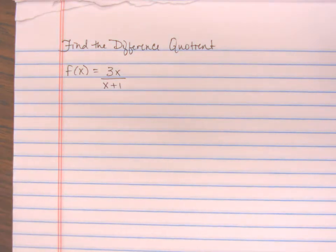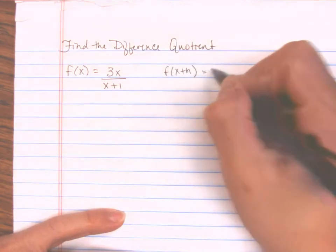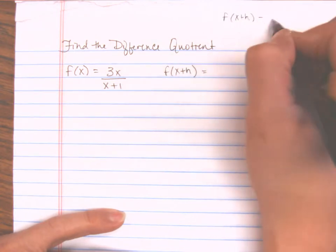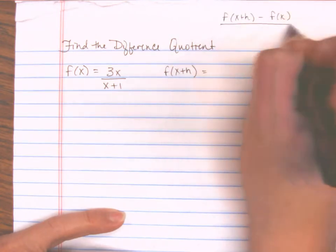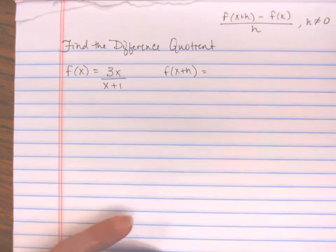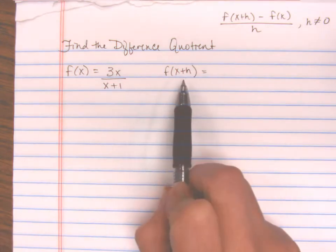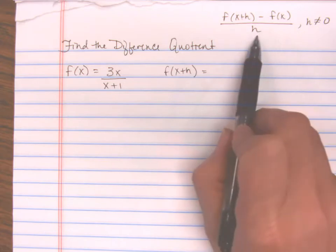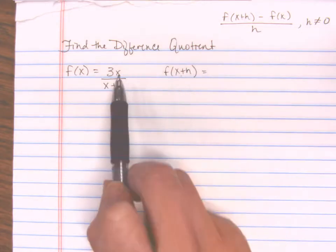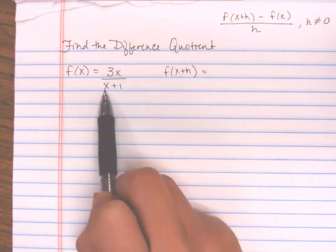The first thing I would like to do is find f(x+h). Remember that your difference quotient is f(x+h) minus f(x), all divided by h, where h is not equal to 0. So finding f(x+h) is my first step before I plug everything back into the formula. I need to take x plus h and plug it into the numerator and denominator where I have x.